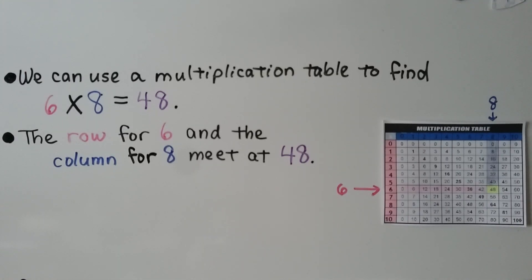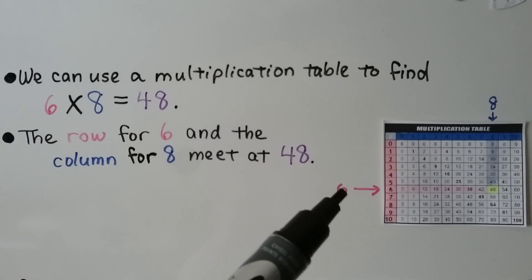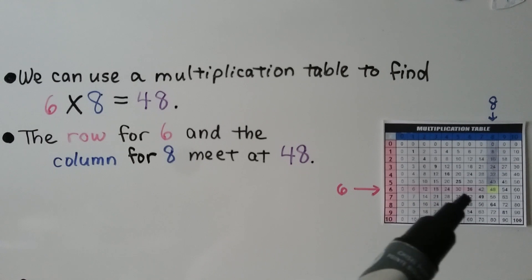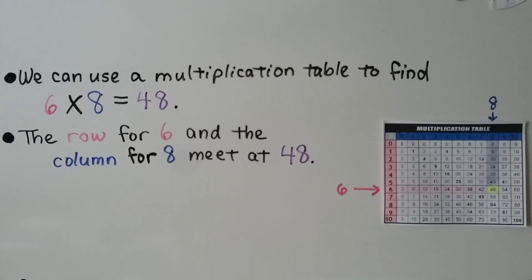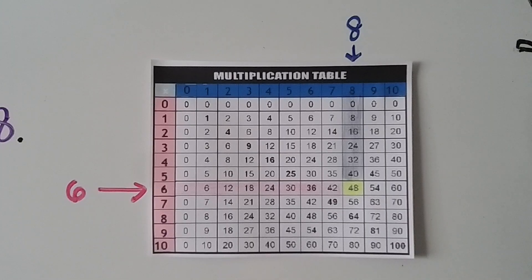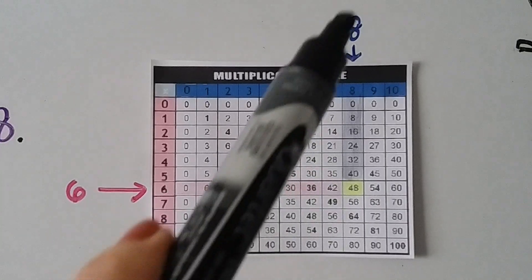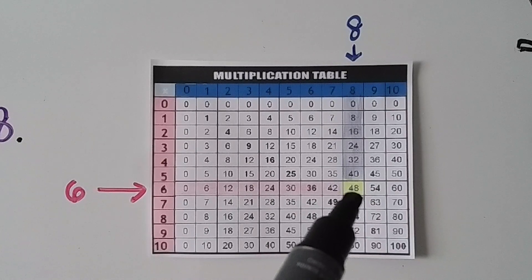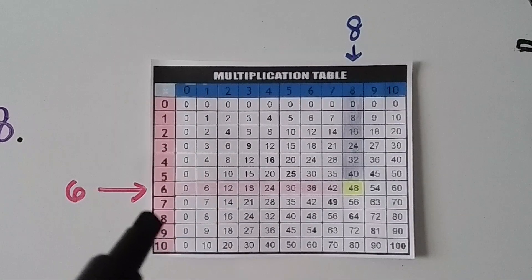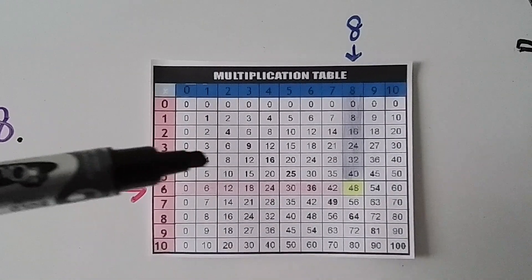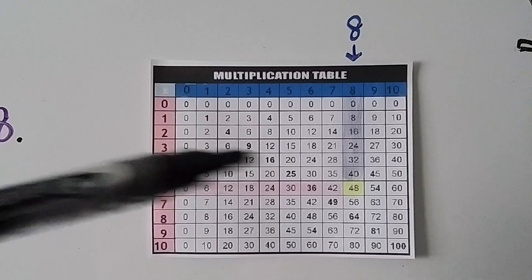We can use a multiplication table to find 6 times 8 is equal to 48. We look at the row for 6 and the column for 8 and see that they meet at 48. Here's the row for 6, here's the column for 8, and they meet at 48. You can find any multiplication product by using the table — just find where the row meets that column, and that's the product.